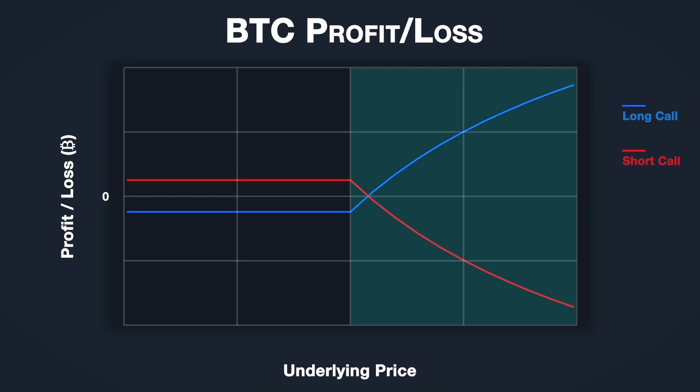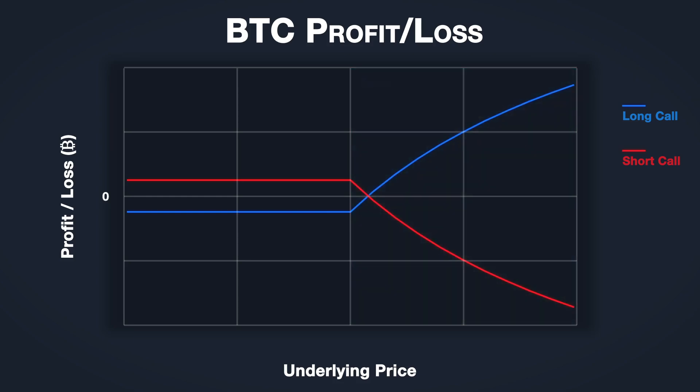You could be forgiven for thinking the maximum profit for the buyer and the maximum loss for the seller is unlimited here, just like with the dollar call options in section 3. However, as we touched on in the previous lecture, this is not the case. Due to the curve in the payoff lines, the maximum profit for the Bitcoin call option buyer is capped at 1 Bitcoin minus the premium paid. The Bitcoin call option seller's loss therefore is also capped at 1 Bitcoin minus the premium collected.